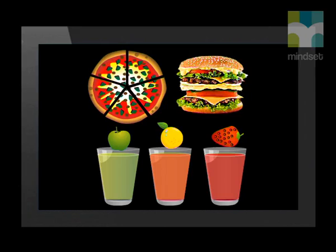Let's look at an example. You're at your school tuck shop that allows you to choose a lunch meal from a set menu. You have two choices for the main course — a hamburger or a pizza — and three choices of a drink: apple juice, orange juice, or strawberry juice. How many different meal combos can you select?